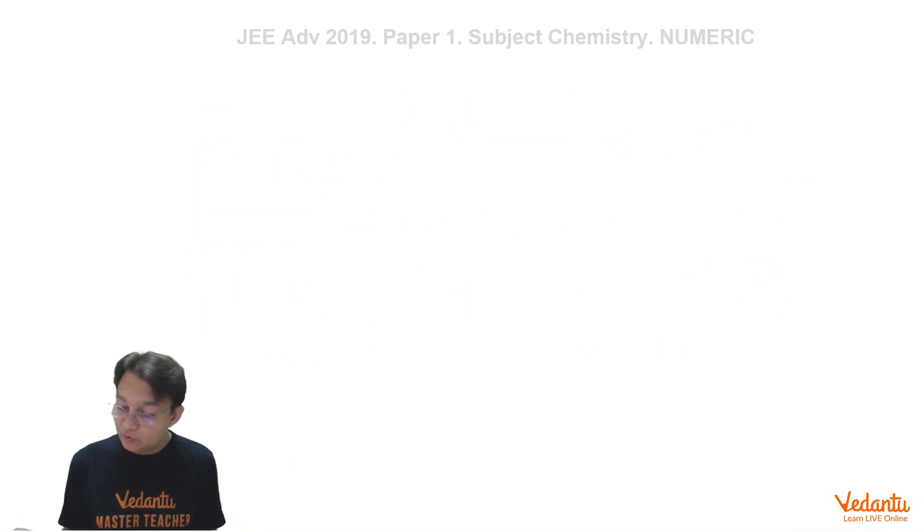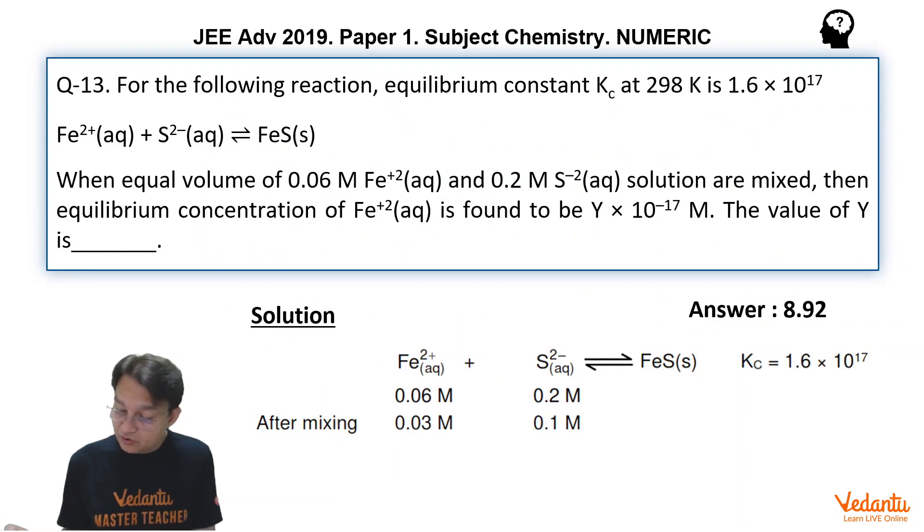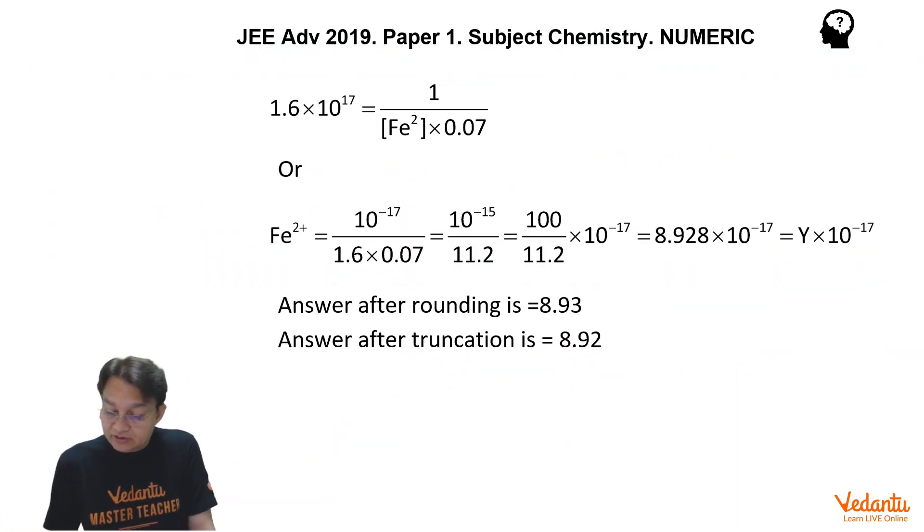Now if we solve this, we will get the value of X and upon solving it, you will get the situation that 10^-15 upon 11.2 and when you solve it, you will get 8.928 × 10^-17. That will be the Fe²⁺ concentration.